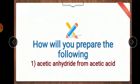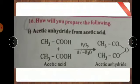How will you prepare the following? Acetic anhydride from acetic acid. Acetic acid formula, CH3COOH. In presence of P2O5, the water molecule is reduced. Water molecule is going to be removed. Remaining thing, acetic anhydride. This is the first one.